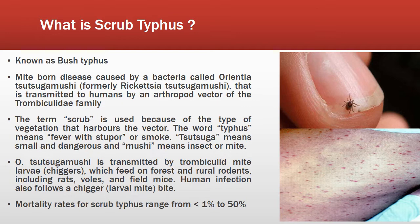Orientia tsutsugamushi is transmitted by trombiculid mite larvae, which are called chiggers, which feed on forest and rural rodents including rats, voles, and field mice. Human infection follows a chigger bite.